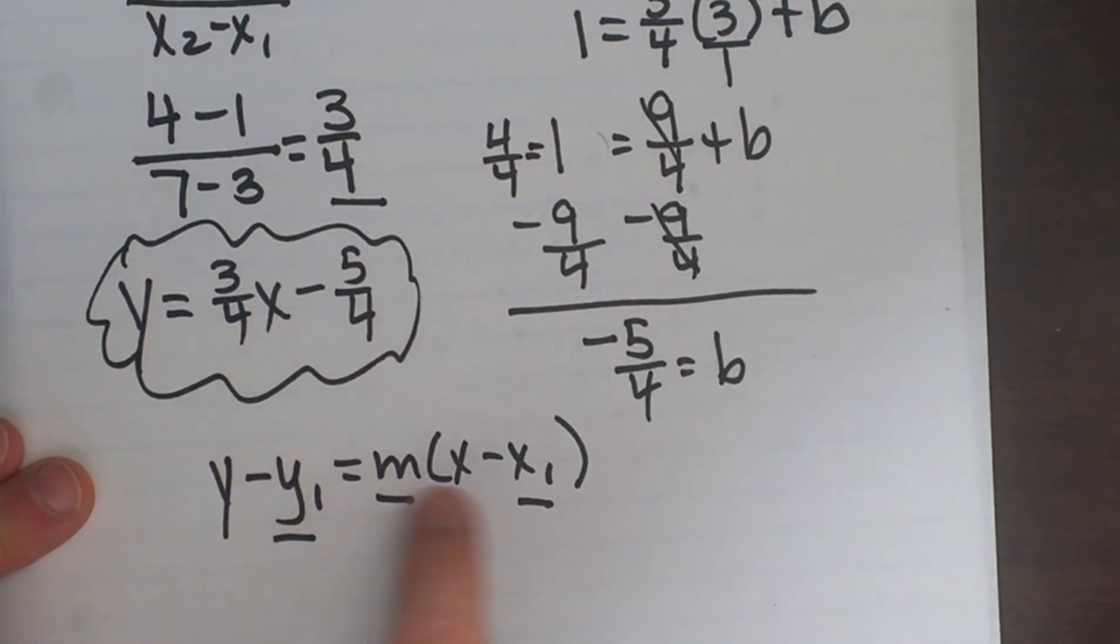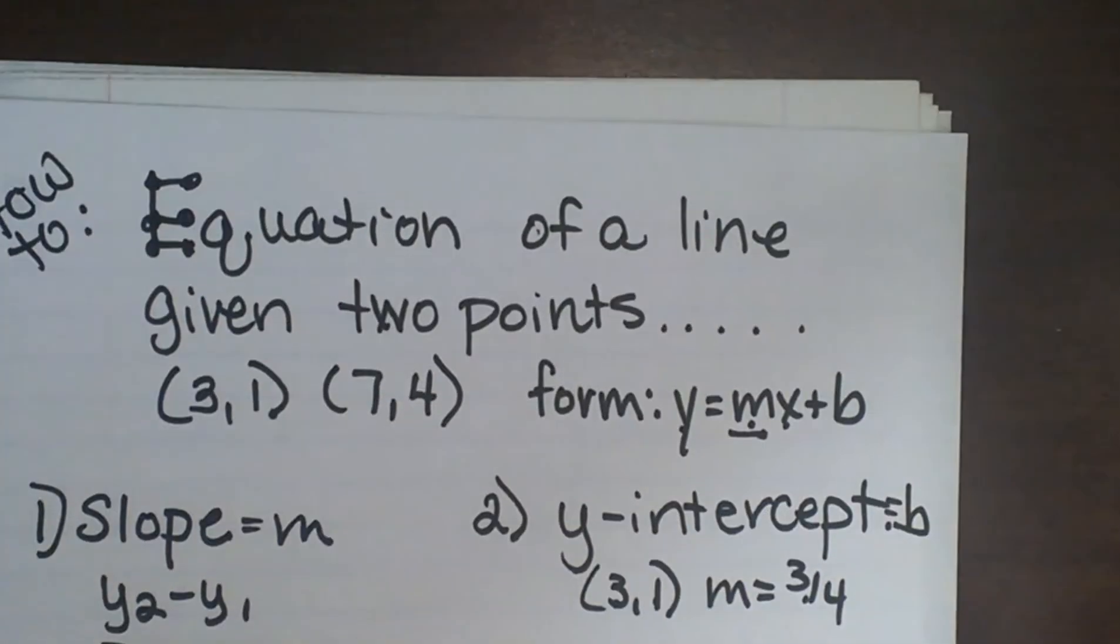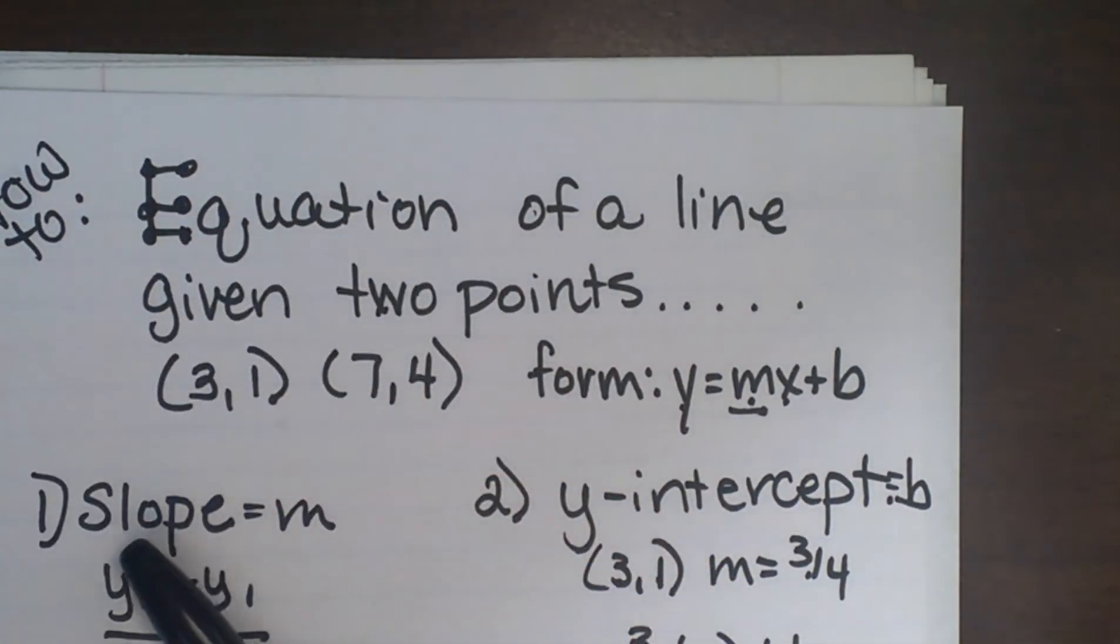That is called a point-slope equation, where you have a point and the slope and you plug in and you just simplify that. So I hope this video was helpful and gave you a couple options to find the equation of a line given two points.